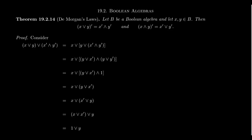So imagine B is a Boolean algebra and let X and Y be elements of said Boolean algebra. Then the following is true. If we take the complement of X join Y, that is we complement the whole thing, this is equal to X complement meet Y complement. And similarly, the complement of X meet Y is equal to X complement join Y complement.